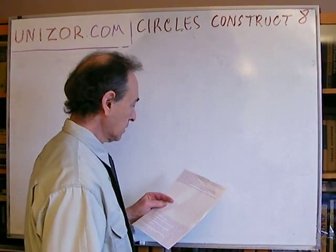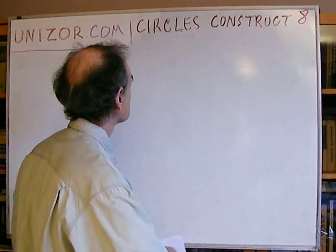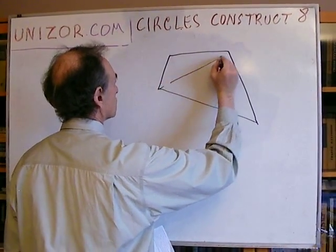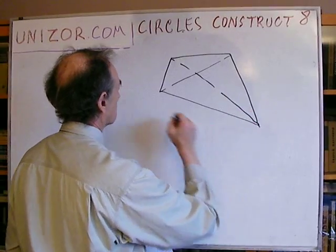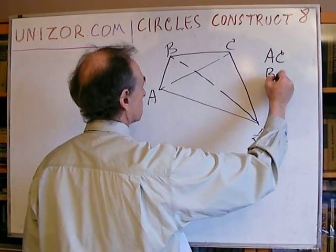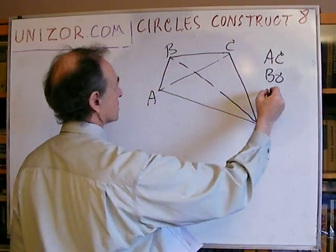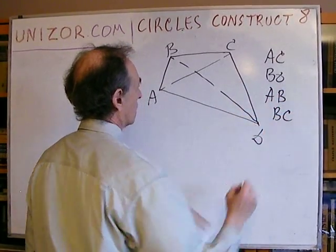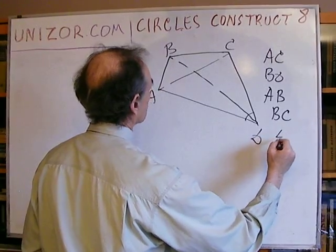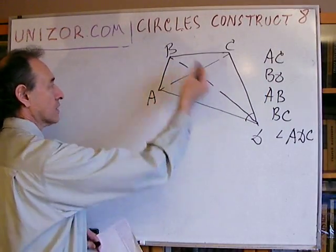Construct a quadrangle by two diagonals, two sides with a common vertex, and an angle formed by two other sides. So we have it. Let's just analyze. We have quadrangle with two diagonals AC and BD, two sides with a common vertex — let's say these two sides AB and BC — and an angle formed by two other sides, which is angle ABC. These are given. We have to construct the quadrangle.